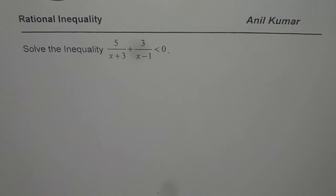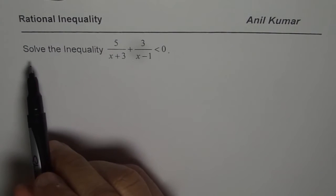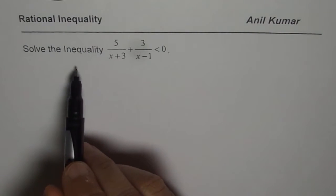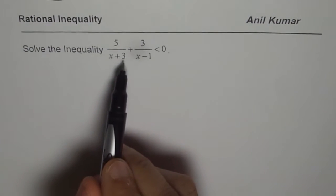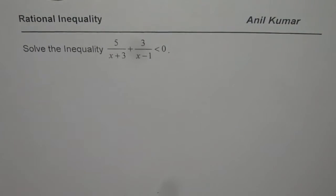I am Anil Kumar and let us see how to solve rational inequality. We are given the question: solve the inequality 5 over x plus 3 plus 3 over x minus 1 less than 0.